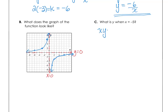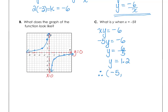Using the equation xy equals negative 6, we want to find y when x is negative 5. So negative 5 times y equals negative 6, giving y equals 6 over 5, which is 1.2. The point negative 5, positive 1.2 lies on our graph in Quadrant 2.